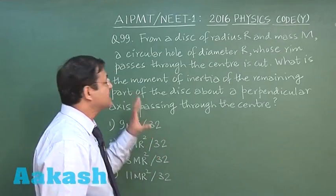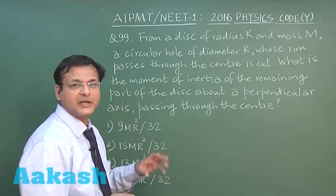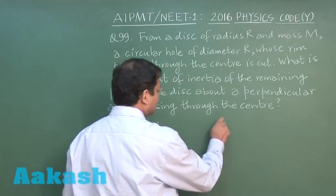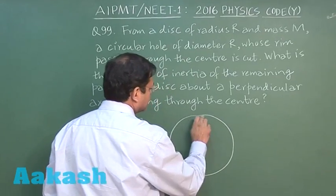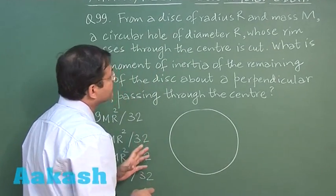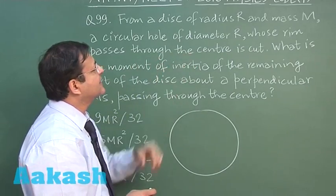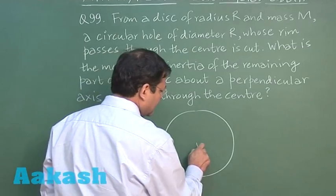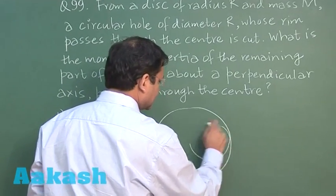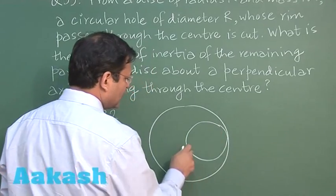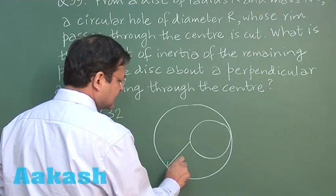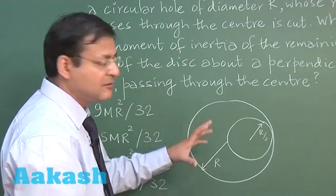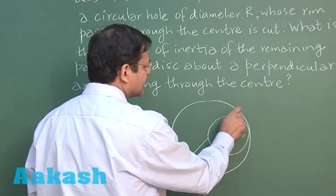Now this question 99 is based on calculation of moment of inertia. It says that from a disc of radius r and mass m, imagine that you have a disc of mass m and radius r. A circular hole of diameter r whose rim passes through the center is cut. That means from here you have cut another disc. Diameter has been given to be r.